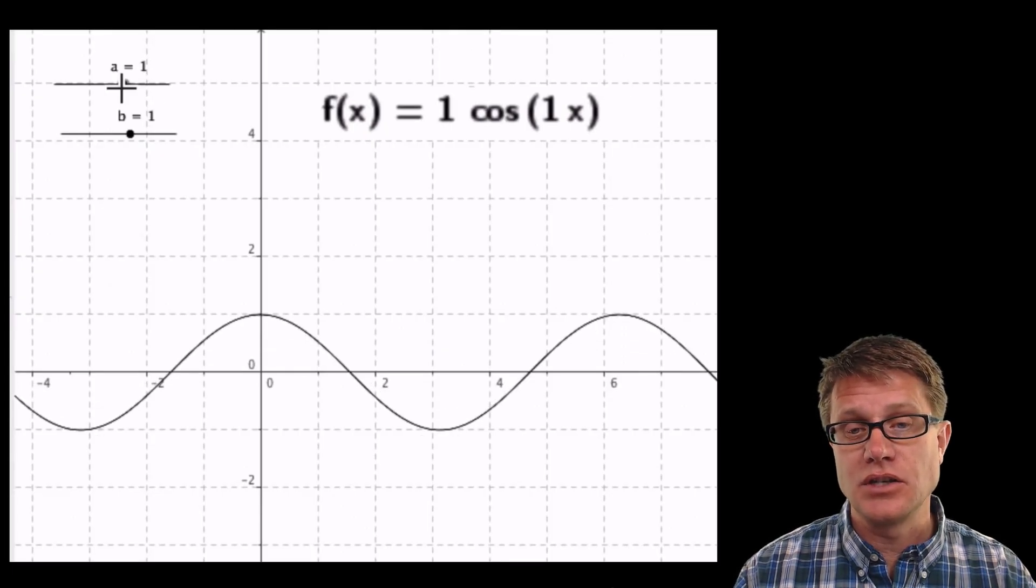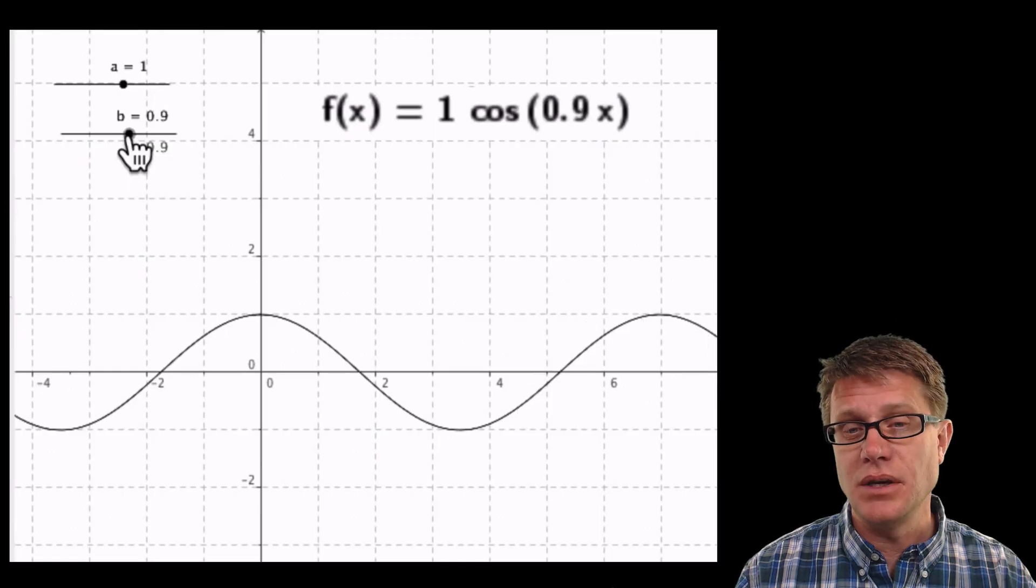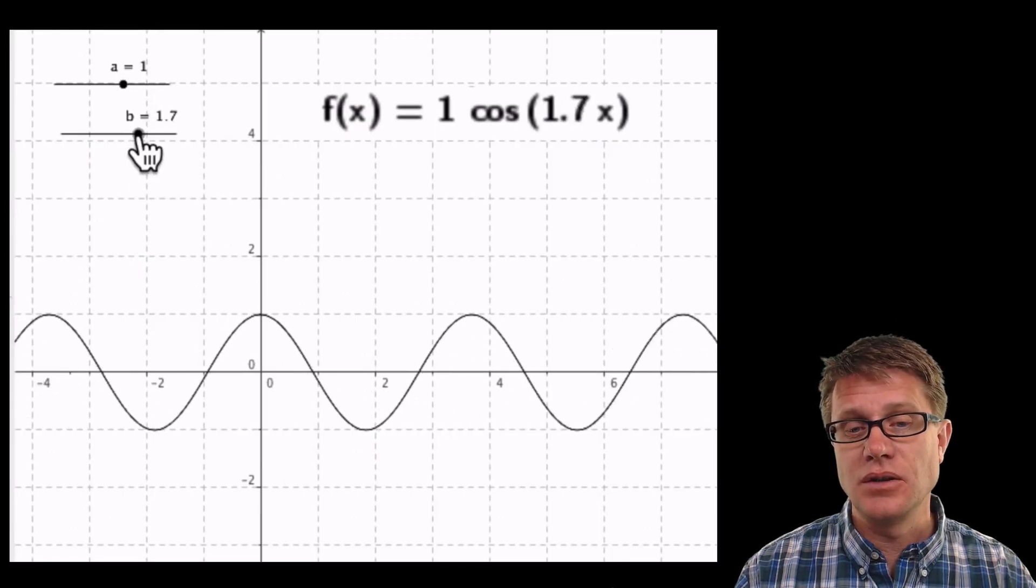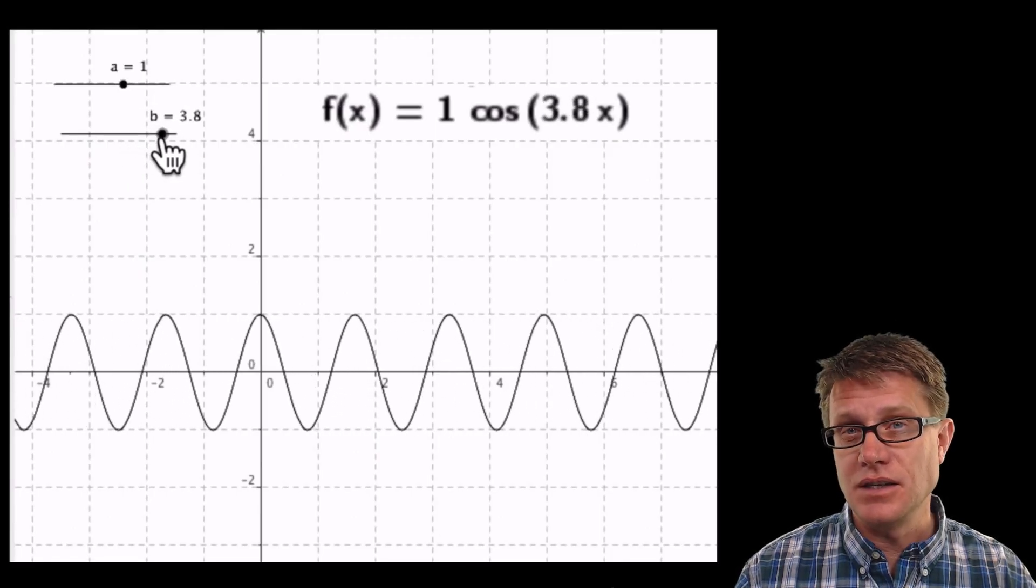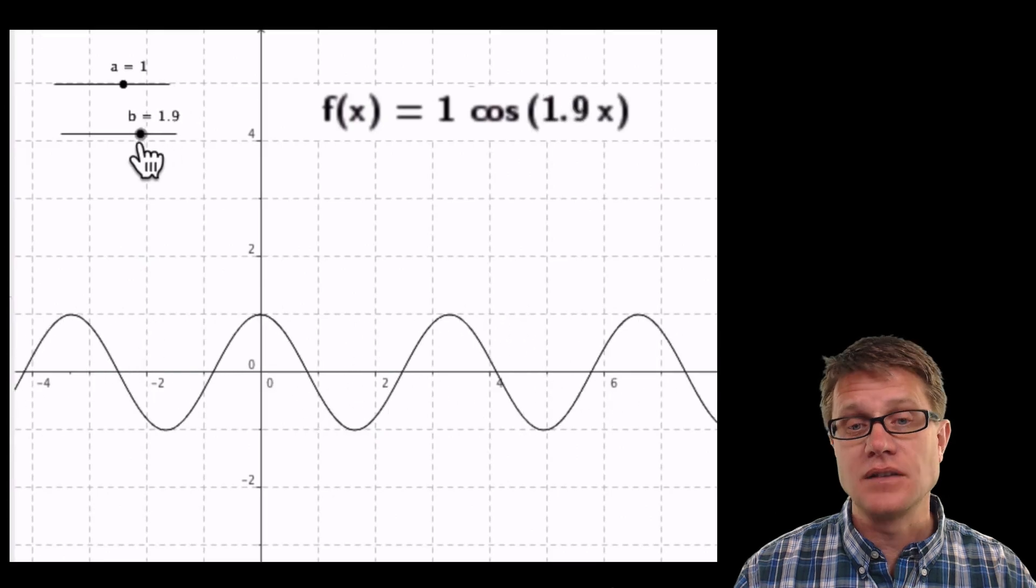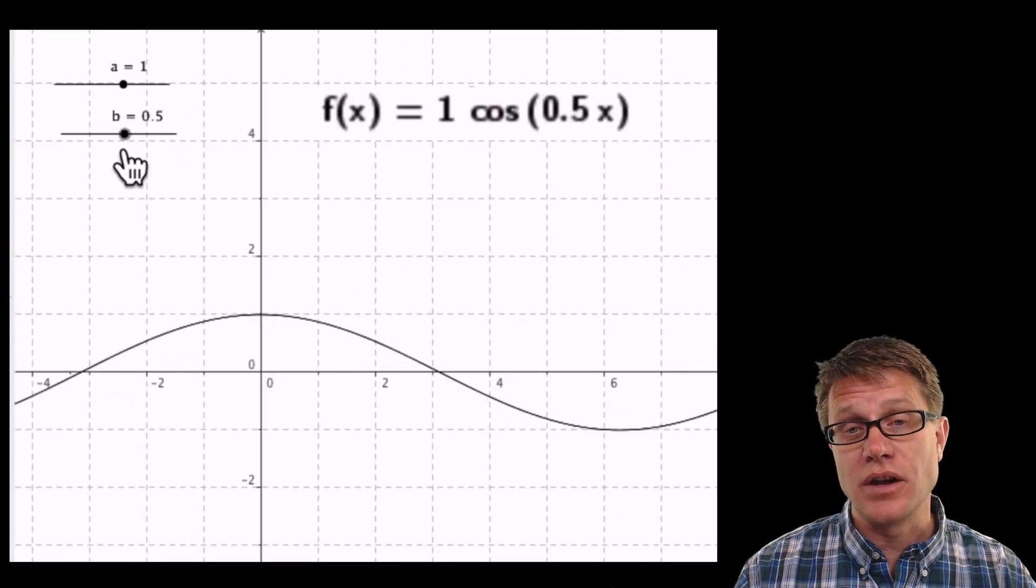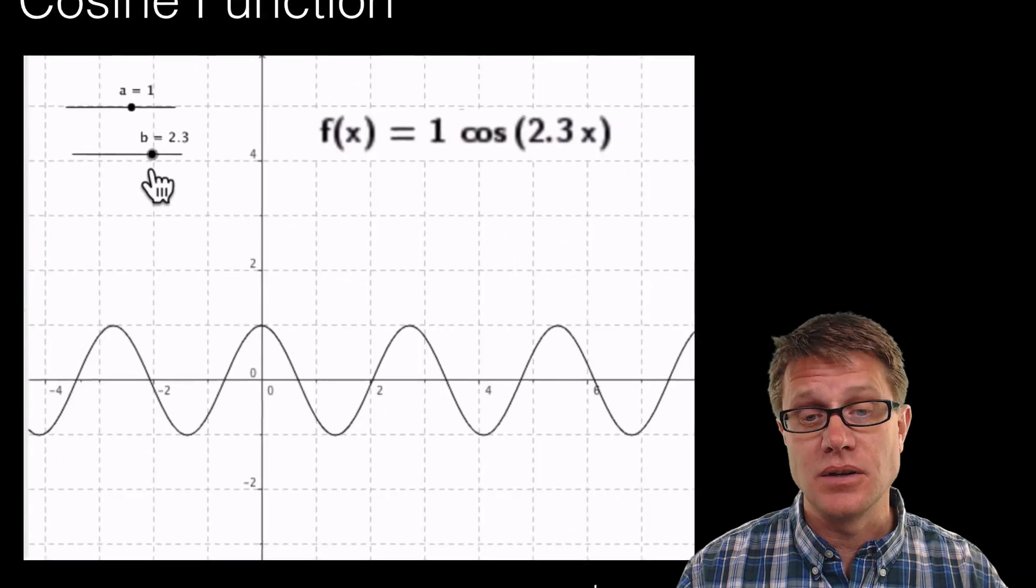Now let's return it to 1 and let's change b. What happens as I increase b? You can see as I increase b the wavelength is actually decreasing. And then as I decrease b then the wavelength is going to increase.